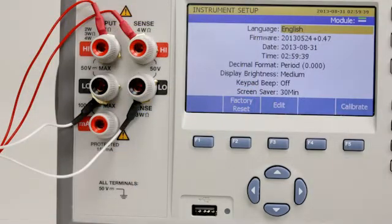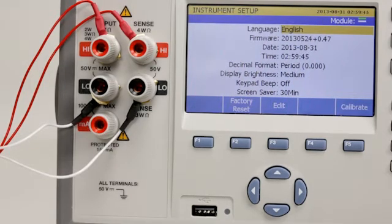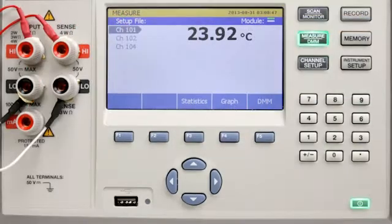Now that we've set up the instrument, suppose we want to use the 1586 in a lab setting to read a PRT. We would first connect the PRT to the five-way binding post. Next, we'll configure the front input channel to read a PRT.